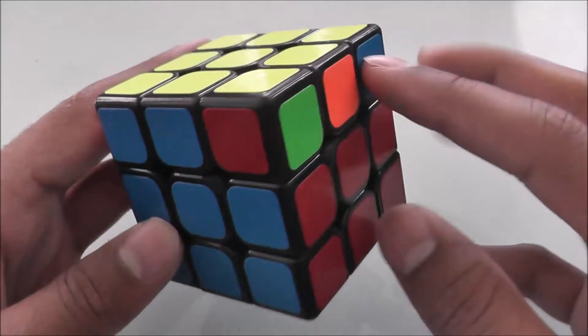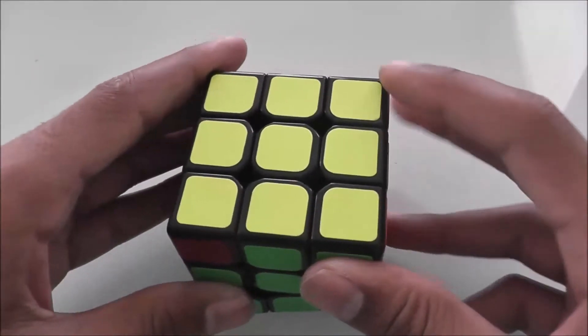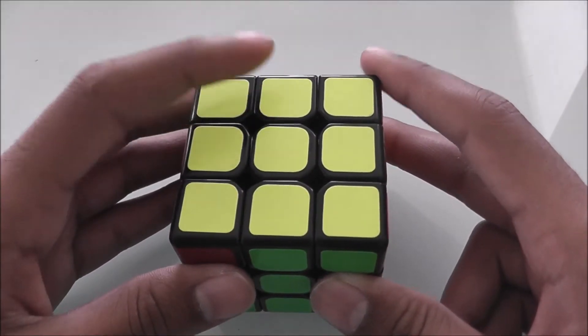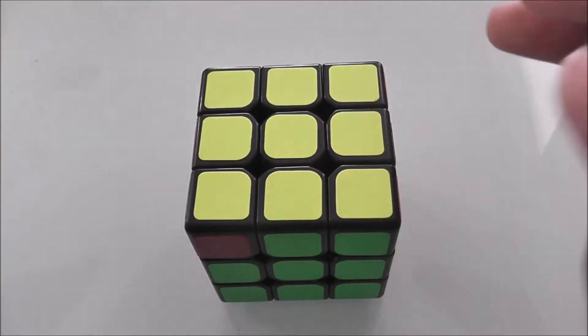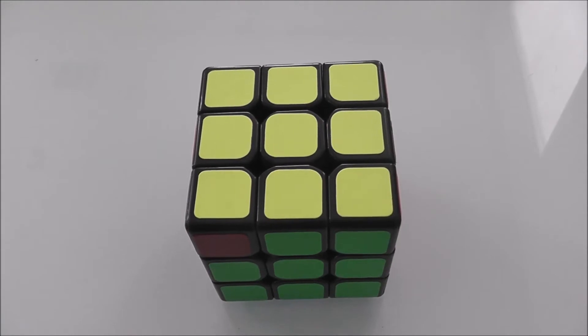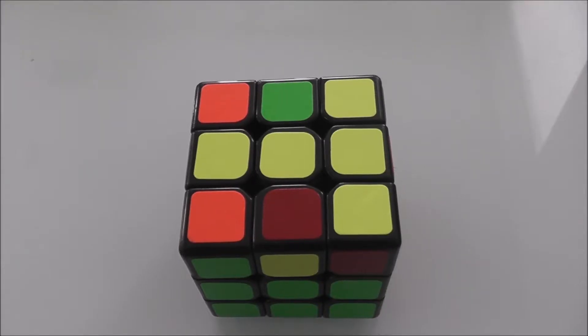There are two steps to orienting the last layer. The first step is to orient all the edges, then you orient the corners, and that results in a fully oriented last layer.